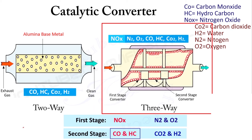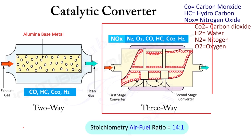Thus H2O and CO2 are formed. The three-way catalytic converter is most efficient when the engine operates at the stoichiometric air-fuel ratio, that is 14.7 to 1 air-fuel ratio. Efficiency also depends on the catalyst used. This is all about catalytic converters in exhaust emissions.